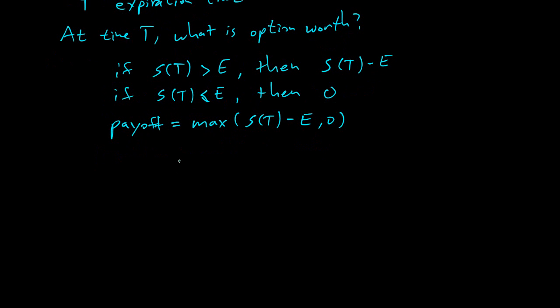Here's the exercise price. We're graphing the asset price at expiration. If it's lower than E, the option is worthless. If it's higher than E, it's S of T minus E. This is the payoff function of a European call option.